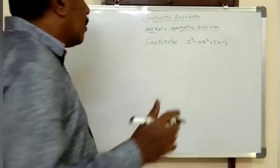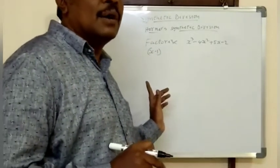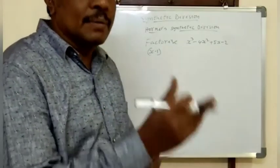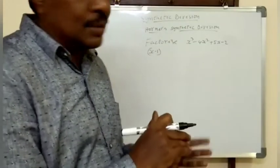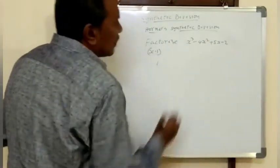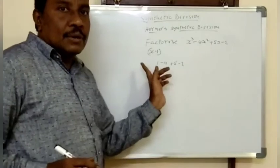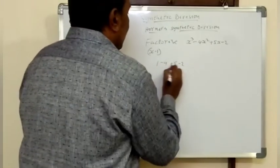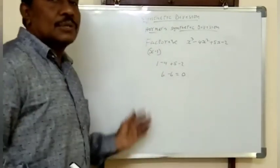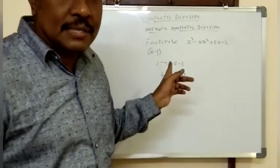Let us check whether x minus 1 is one of the factors. You already know from the previous class how to check this: find the sum of the coefficients. If the sum of the coefficients equals 0, then x minus 1 is one of its factors. The coefficients are 1, minus 4, plus 5, minus 2. So: 1 plus 5 is 6, minus 4 minus 2 is minus 6, and minus 6 plus 6 is 0. So the sum of the coefficients is 0, meaning x minus 1 is one of its factors.